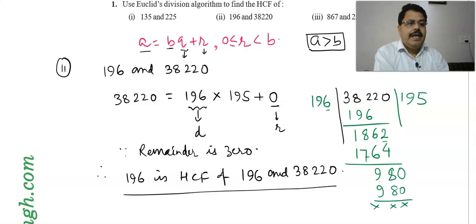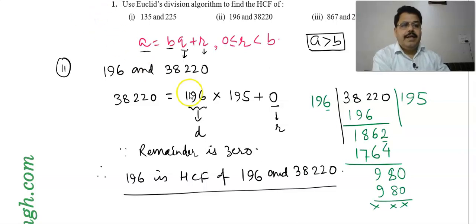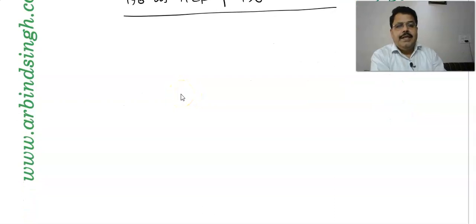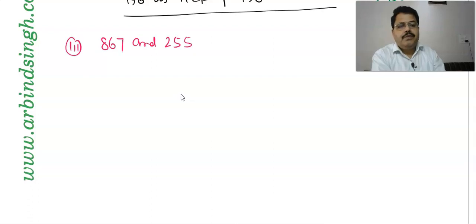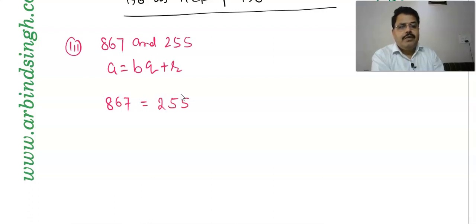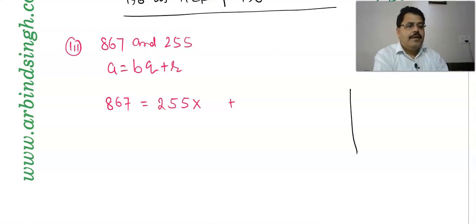Now the third question is 867 and 255. Which one is bigger? 867 is bigger, so A = 867 and B = 255. We need to write it in the form A = BQ + R. If you cannot do it mentally, do the rough work and divide. 255 goes into 867 three times: 3 × 255 = 765. Subtracting: 867 − 765 = 102. So 867 = 255 × 3 + 102.